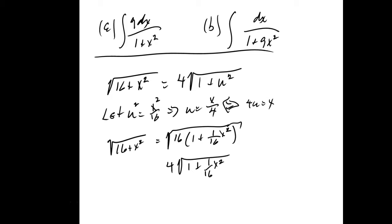Homework exercises: any of the odds 1 through 9, do number 11, any of the odds 13 through 31, any of the odds 33 through 69, and try to do 71 and/or 73. Number 73 is a proof — if you want to try it, knock yourself out; it's not bad. And if those aren't enough, you can do any of the odd numbers 75 through 83.